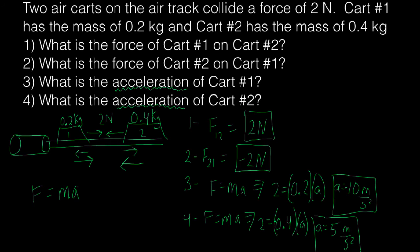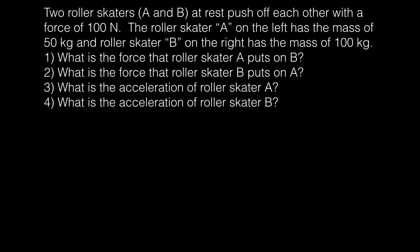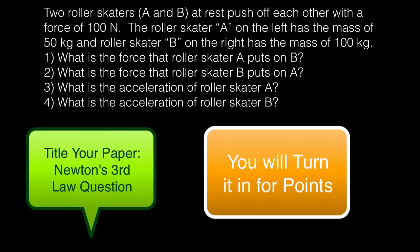Let me erase this and get to the assignment for this video. The assignment will be this question. It says, two roller skaters A and B are at rest, and they push off each other with a force of 100 newtons. Roller skater A, which is on the left, has a mass of 50 kgs. And roller skater B, on the right, has a mass of 100 kgs. And you're going to answer the same type of questions that we just did in the previous video. If you get stuck, remember you can always go back in the video and go through the example problem. But I think it should make sense. Give it a shot. If you need help, if you have any questions, feel free to come by and ask. Good luck.